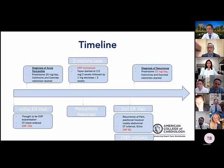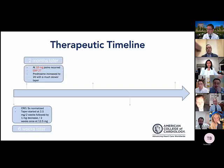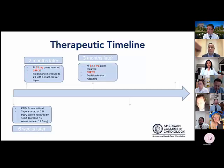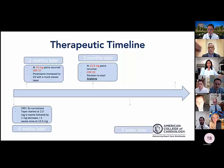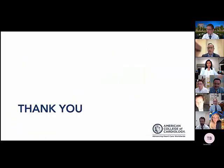With the MRI confirming recurrence, she was restarted on prednisone 25 mg per day, colchicine, and exercise restriction. Six weeks later CRP and symptoms normalized. Tapering began again, but when she reached 15 mg the pain recurred. A slower taper was attempted, but at 12.5 mg her CRP rose and pain recurred again. She was then started on anakinra, and six weeks into injections she had complete absence of symptoms and normalized CRP. At the most recent visit, the situation remains stable.